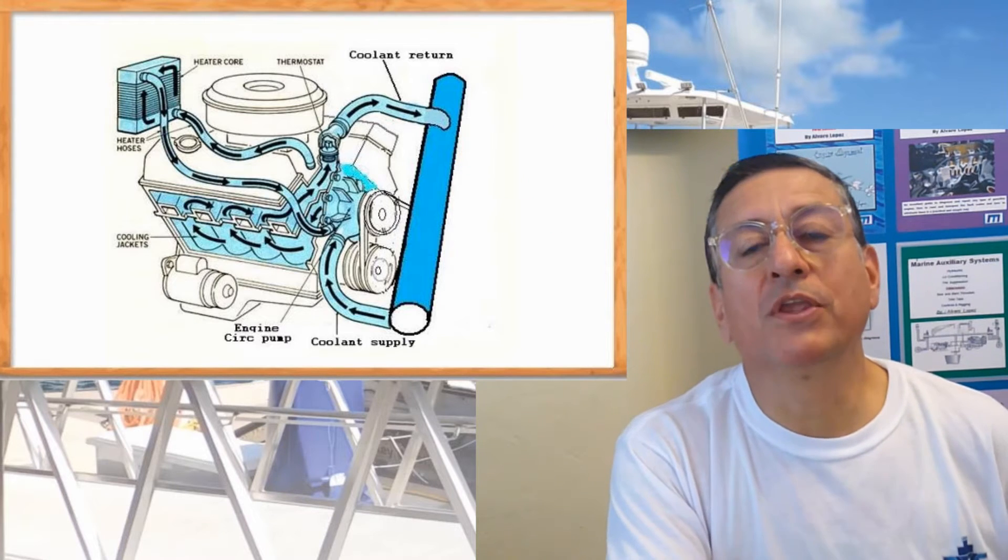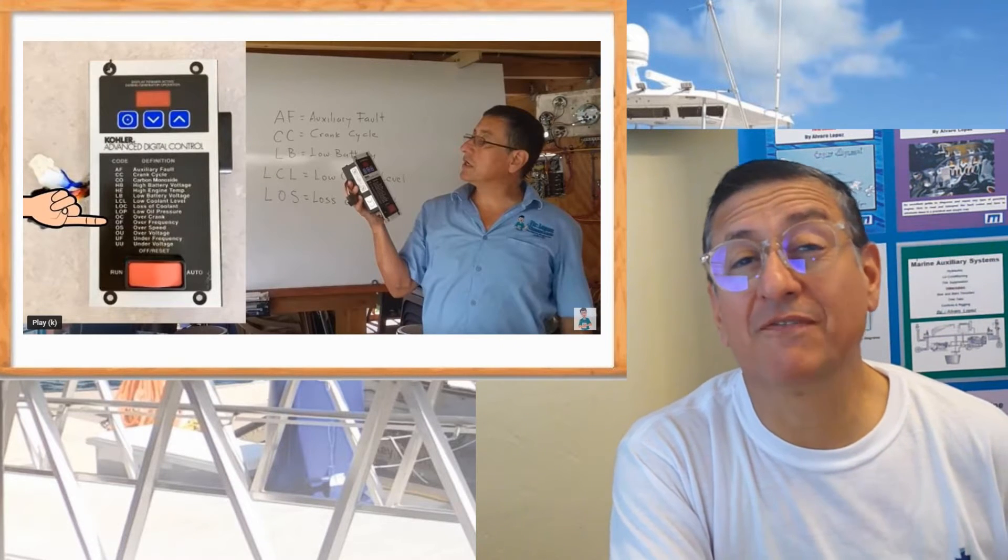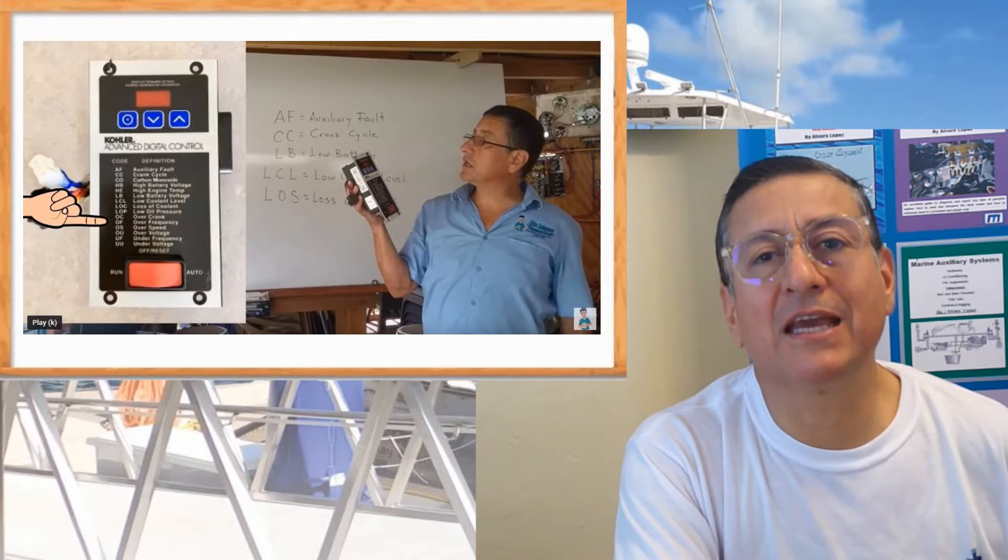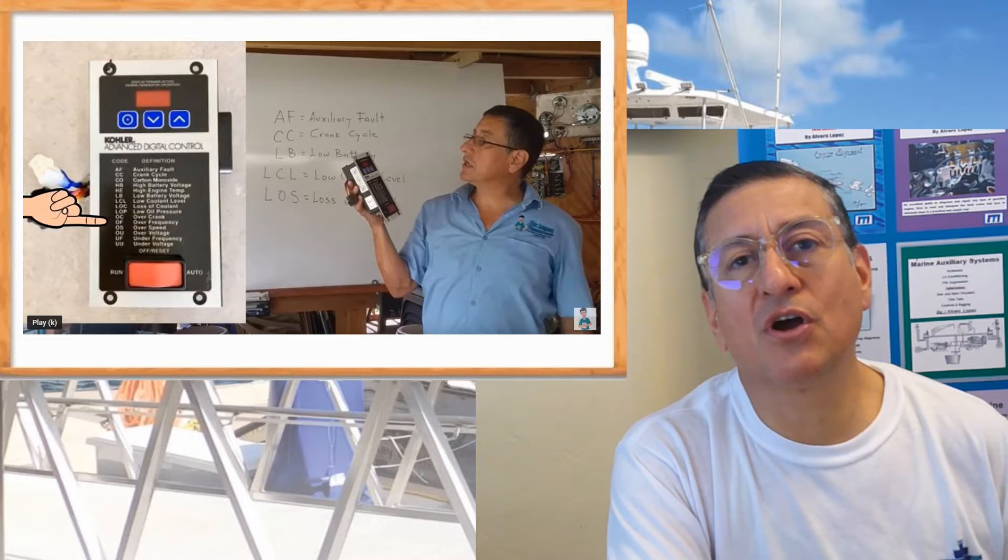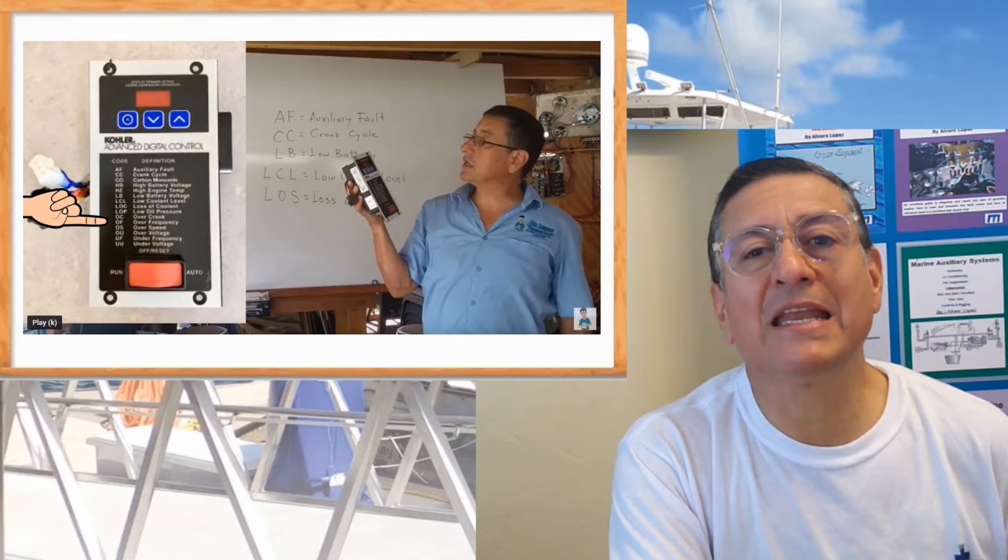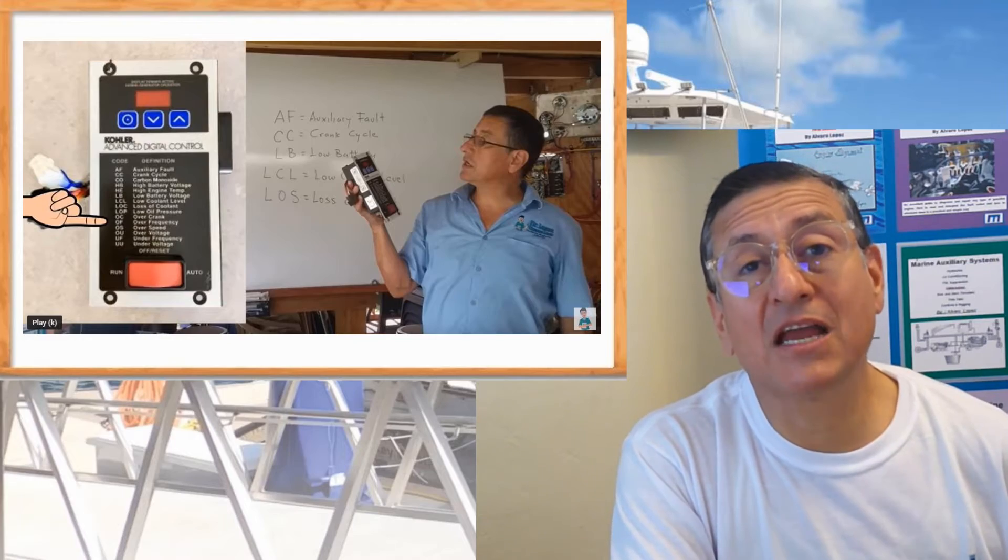When you have high exhaust temperature, when you have that code in your engine or generator, this is an indication that the temperature of the exhaust gases is too high. Why? Normally because you have lack of raw water.